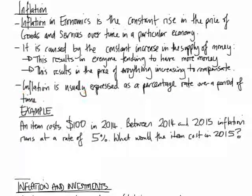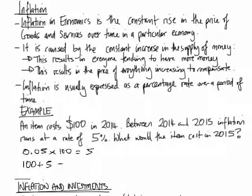Now inflation is usually expressed as a percentage rate over a period of time. A simple example would be an item costing $100 in 2014. If you had inflation running at a rate of 5% between 2014 and 2015, what would the item cost in 2015? Basically, inflation is saying the item is going to increase in cost by 5% over that year. So 5% as a decimal, 0.05 times 100 is 5, so the item would cost $100 plus $5 — $105 in 2015.